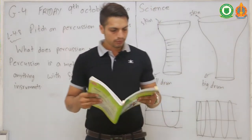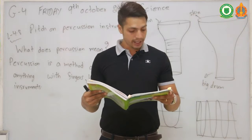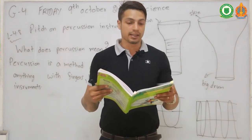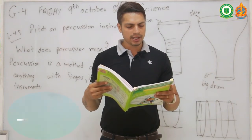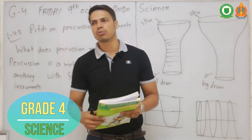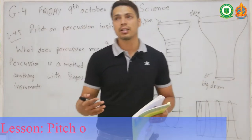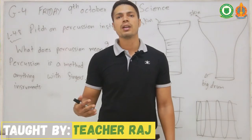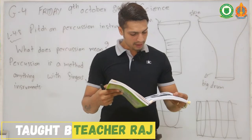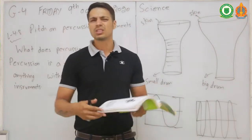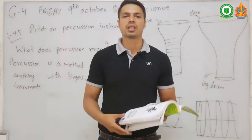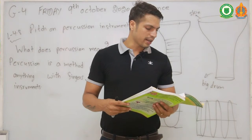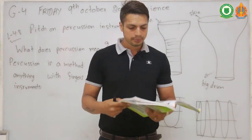Pitch on percussion instruments — page number 66 and 67. Percussion instruments include drums, shakers, and rattles. Drums are one of the oldest and simplest musical instruments. Musical instruments are instruments that make sounds used in music — like xylophone, drums, piano, and tambourine. There are so many musical instruments used in the musical industry.